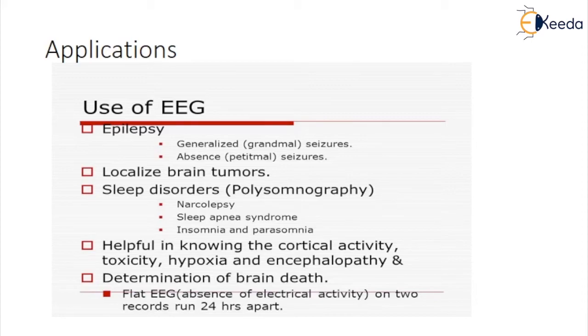Dot density modulated spectral array is another method for displaying power spectra. This format displays a power spectrum as a line of variable intensities or densities with successive epochs stacked vertically. Areas of greatest density represent frequencies which make the greatest contribution to the EEG power spectrum.